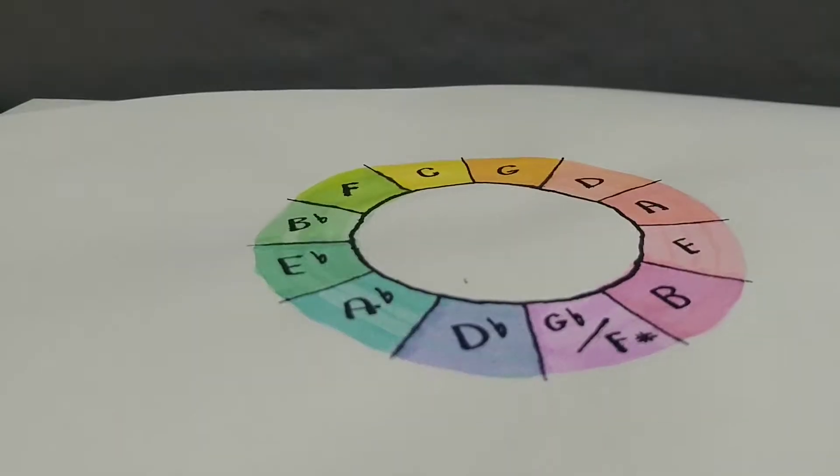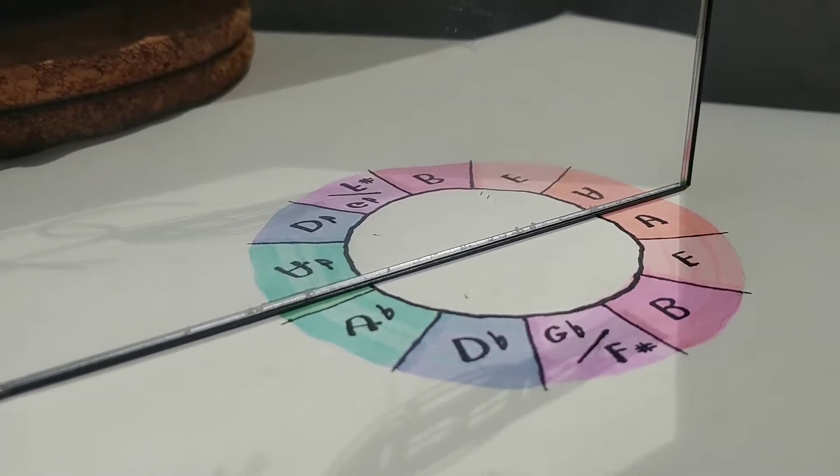If you've ever played around with negative harmony before, then you probably understand that the basic concept is to use your key center as an axis and to flip notes or chords over that axis along the circle of fifths.